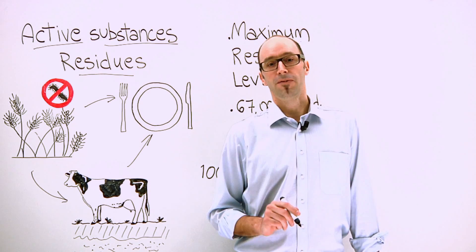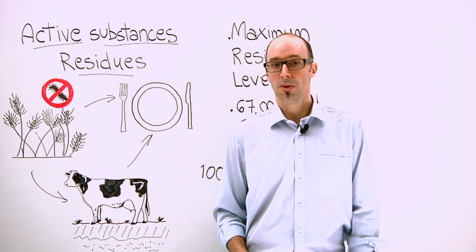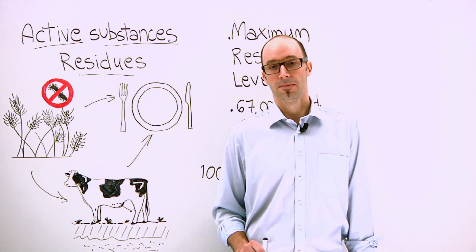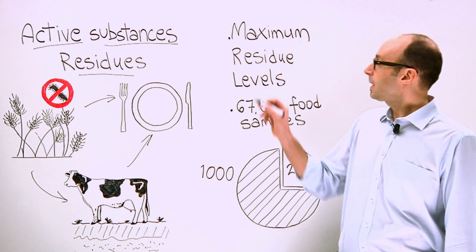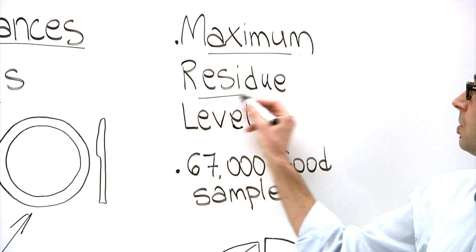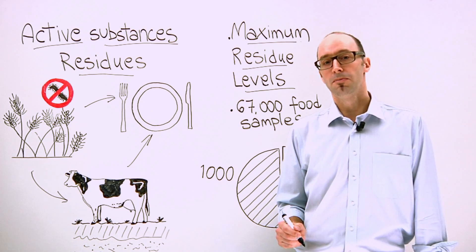Crucially, the amount of pesticide residue in food must be as low as possible and the food must be safe to eat. This is maintained through maximum residue levels, which are legally enforced and monitored.